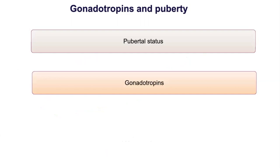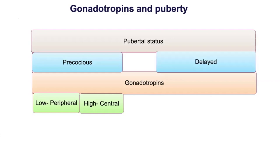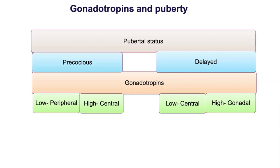When a child presents with a pubertal disorder, the clinician must first confirm whether a pubertal disorder is present, assess its extent, and determine whether it is precocious or delayed puberty. In precocious puberty, low gonadotropin levels indicate peripheral precocious puberty, while high LH indicates central precocious puberty. In delayed puberty, low gonadotropin levels suggest a central cause, while high gonadotropin levels suggest a peripheral or gonadal cause.